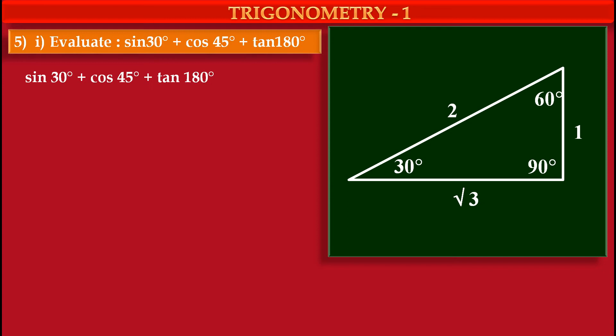Now we have to find value of sin 30°. We know sin 30° means opposite side upon hypotenuse. Now here, opposite of 30° is 1 and hypotenuse is 2. So value of sin 30° is 1 upon 2.